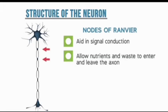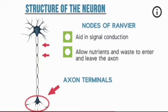After that we have the nodes of Ranvier. The nodes of Ranvier are basically junction points within the nerve fiber or axon where signal conduction is aided. At the same time, nutrients can enter the axon and waste products can leave the axon at these nodes.